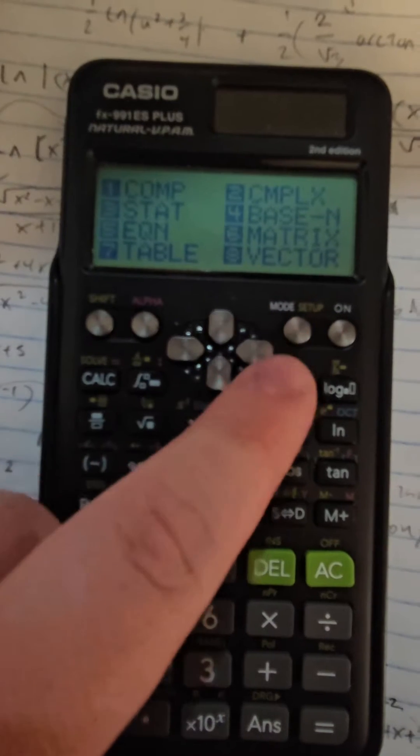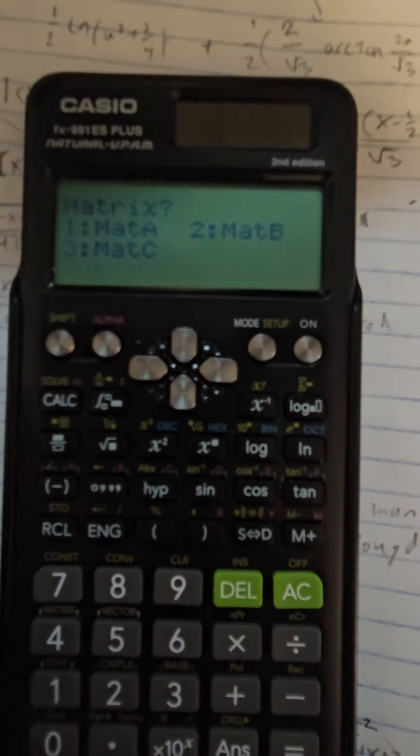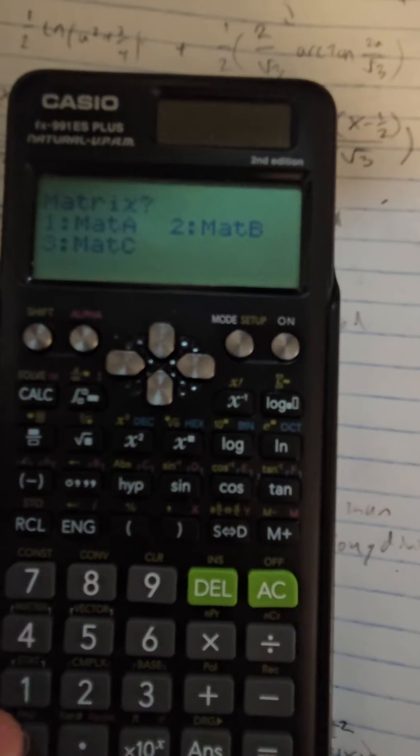So you press Mode, then you press 6 for Matrix. Now we're going to pick a matrix. Let's do Matrix A.